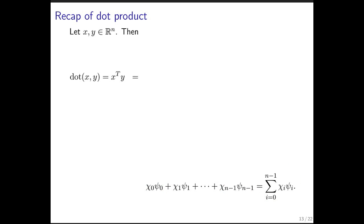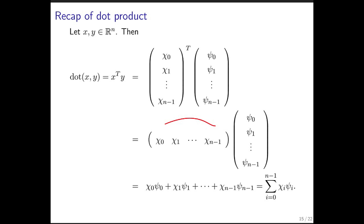Remember that equals x transpose y, just a different notation for the same thing. If we expose the actual components of the two vectors, we can think of it as a row vector times a column vector.